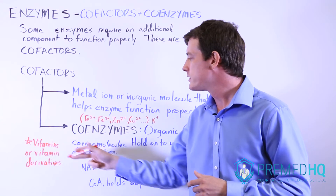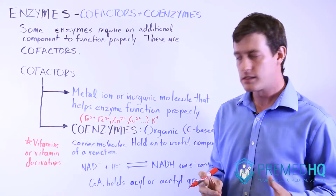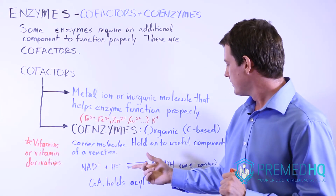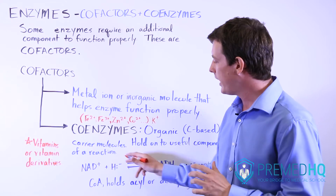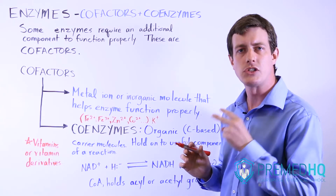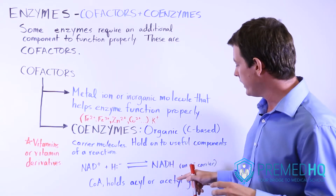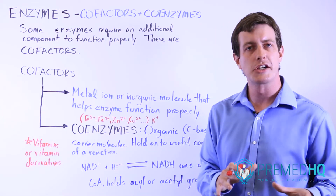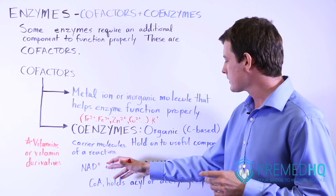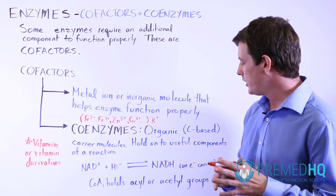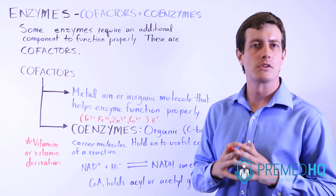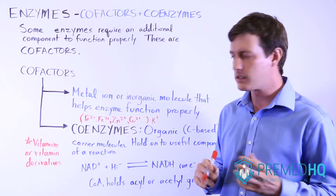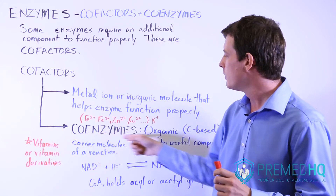Coenzymes are often vitamins or derived from vitamins. A common example is NAD+, which picks up a hydride ion — a hydrogen carrying two electrons — and turns into NADH. By picking up this hydride, it carries electrons. You see NAD+ being converted into NADH to carry electrons throughout the glycolysis process or the citric acid cycle, also known as the Krebs cycle. NAD+ is one of the common coenzymes you'll encounter.